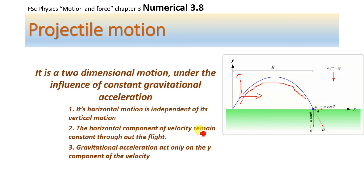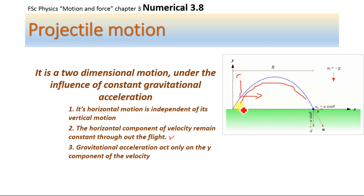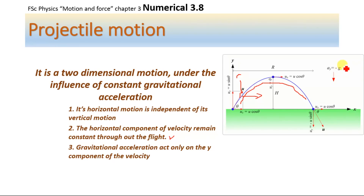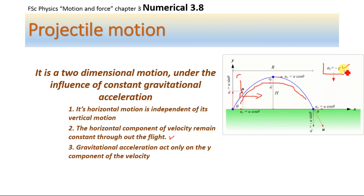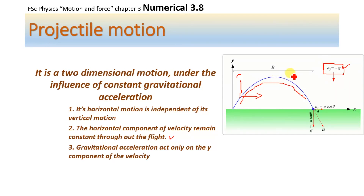The horizontal component of velocity remains constant throughout the flight, because there is no acceleration along the horizontal axis. While a constant gravitational acceleration, minus g, acts on the y-component of the projectile. This gravitational acceleration, minus g, is along the y-axis only and has no effect on the horizontal motion of the object.